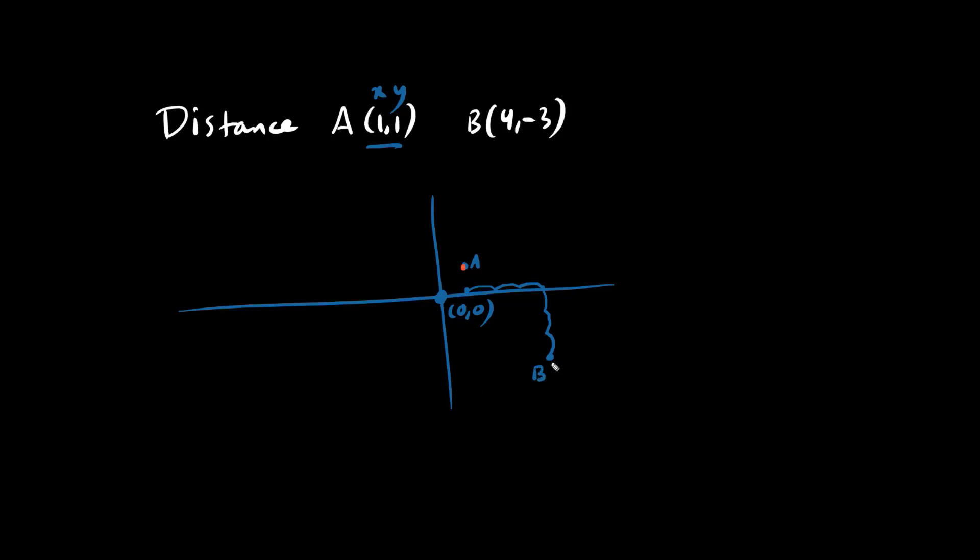So from point A to point B, we're going 1, 2, 3 right, and we're going 1, 2, 3, 4 down. So we can draw a right triangle this way. Recall the Pythagorean triple 3, 4, and 5. So the distance AB is 5.